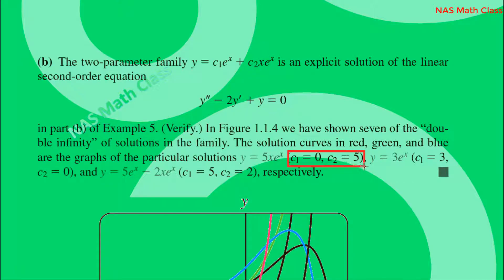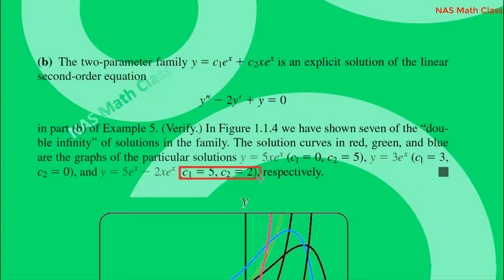When C1 = 5 and C2 = 2, y = 5·e^x - 2x·e^x. When C1 = 0 and C2 = 5, the particular solution is y = 5x·e^x. These are all members of the two-parameter family, each representing a particular solution for a specific choice of parameters.